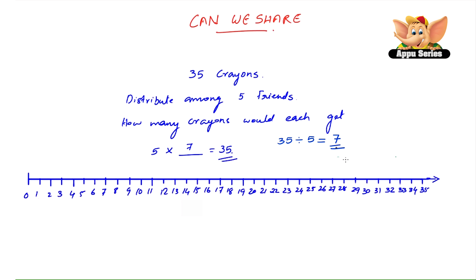Alright, let's try it on the number line. So here's the number line. So from 35, we'll jump back 5 numbers each time, up to 0. Here we go. 1, 2, 3, 4, 5, 6, 7. There we go. We took 7 jumps. So 35 divided by 5 equals 7.